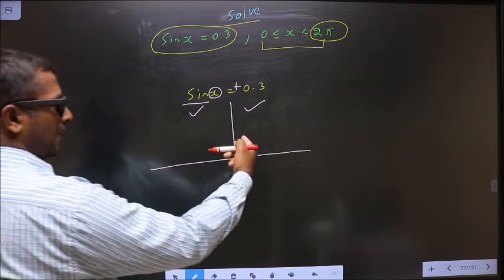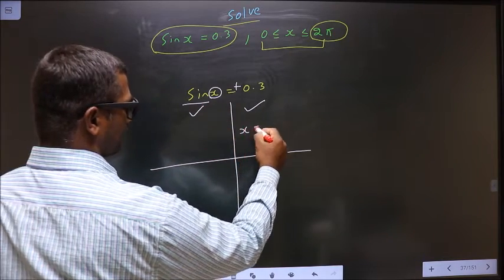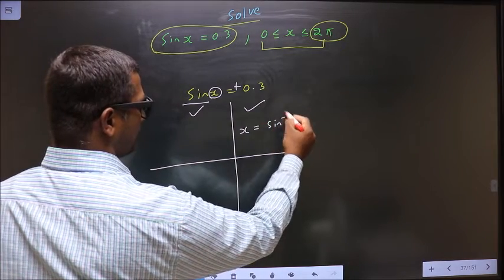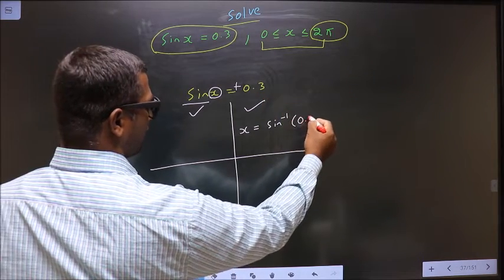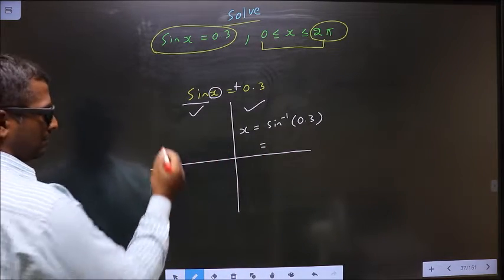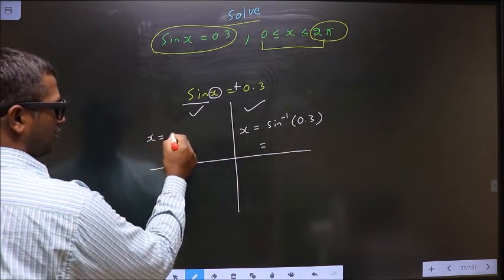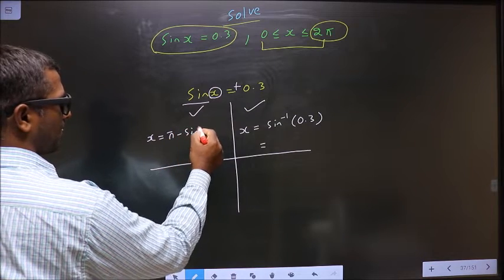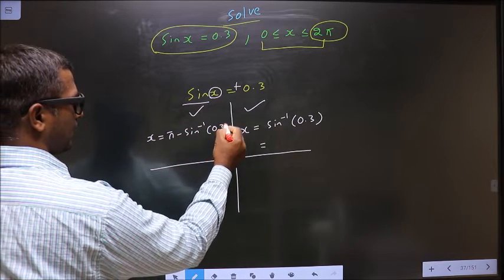To get an angle in the first quadrant, we do directly sin⁻¹(0.3). To get an angle in the second quadrant, we do π - sin⁻¹(0.3).